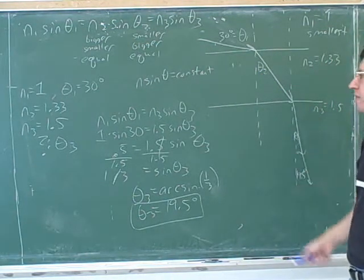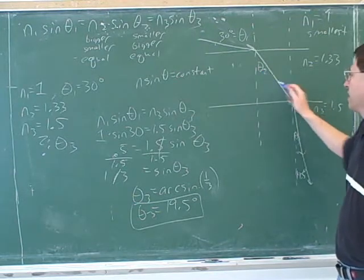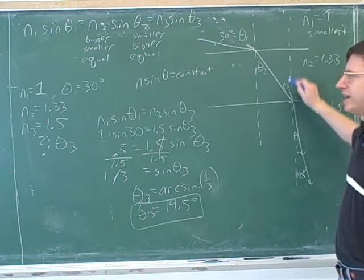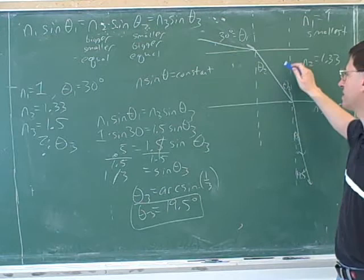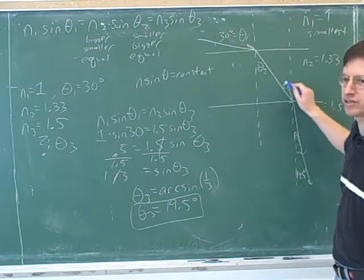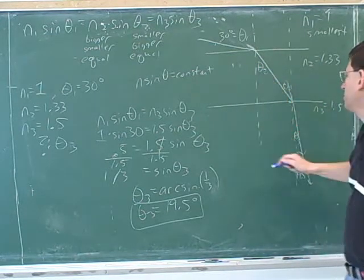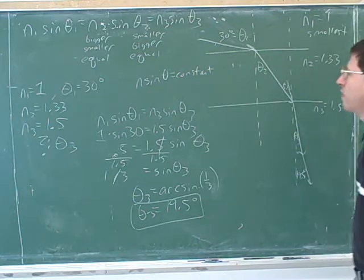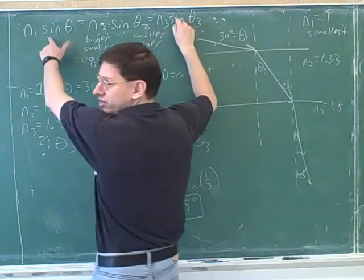Now, that would work. That would give you the right answer. By the way, that works because this angle is also theta 2, right? Because these are parallel lines. When you have an intersection between two parallel lines, these two angles are the same. So once you know theta 2, you can use theta 2 to find theta 3, but why don't we just cut out the middleman and use these two terms?